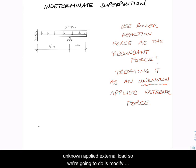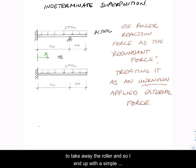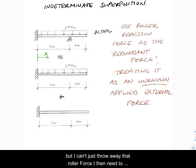What we're going to do is modify the actual structure. My modification is going to be to take away the roller, and so I end up with a simple cantilever beam. But I can't just throw away that roller force - I then need to add it in on a second structure.